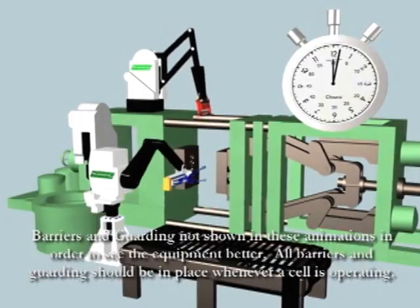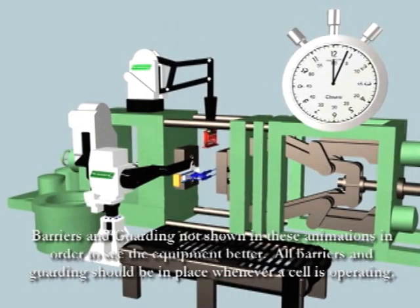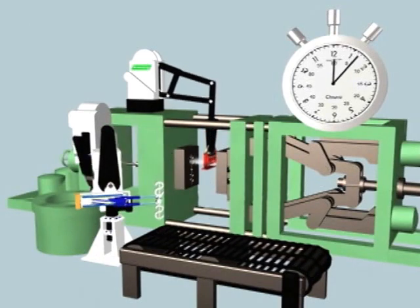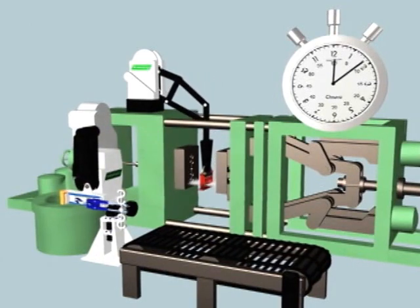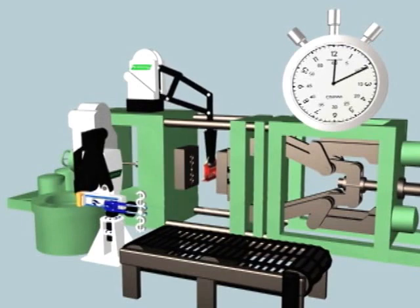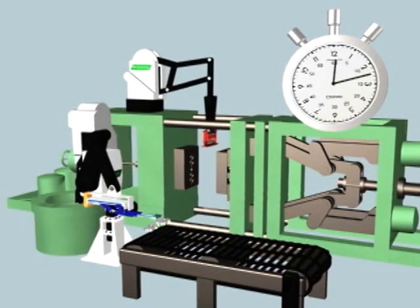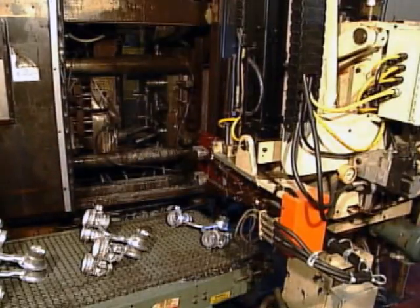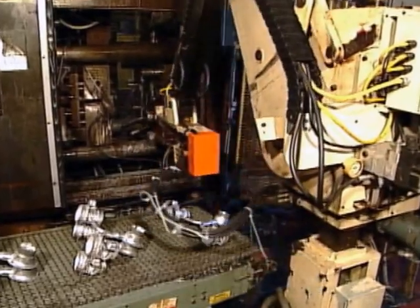The die-open time is the longest event in the overall cycle time of the die-cast machine. The ability to effectively use the extracting and reciprocating devices is crucial to the reduction of the cycle time. The common goal for extractors, robots, and reciprocators is essentially the same.